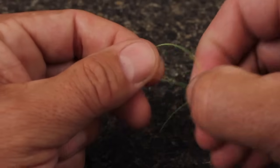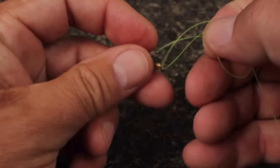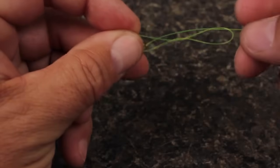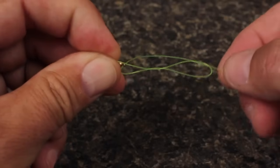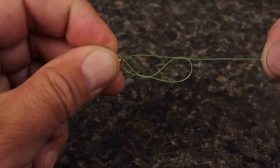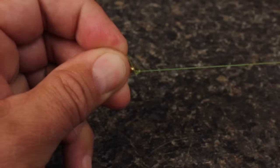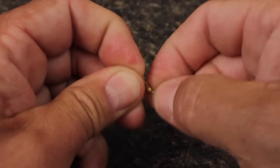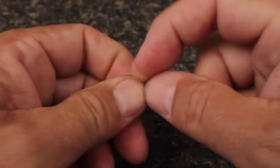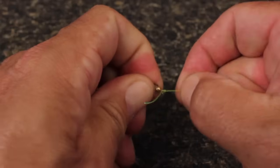Bring the tag back over itself and then push it up through the loop, grabbing it with the thumb and index finger of your left hand as it exits. Draw the figure eight shape closed by pulling on the running line and when you seat it, try to get the tag pointed out at a 90 degree angle.